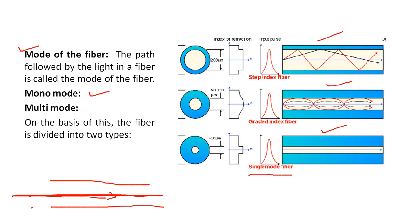Now, for example, if this is the path followed by the light ray while traveling through the core of the fiber after total internal reflection, and if this is a second path followed by the light ray, now here we have more than one path — then that is known as multi-mode fiber. So on the basis of this, the fiber is divided into two types.